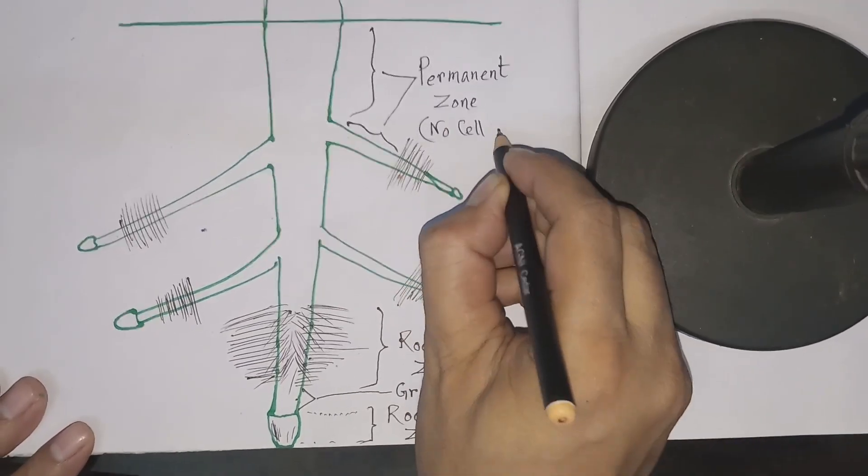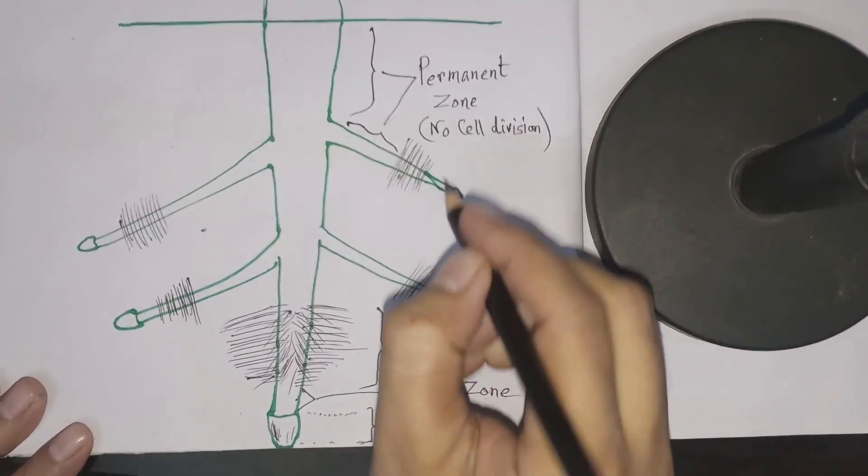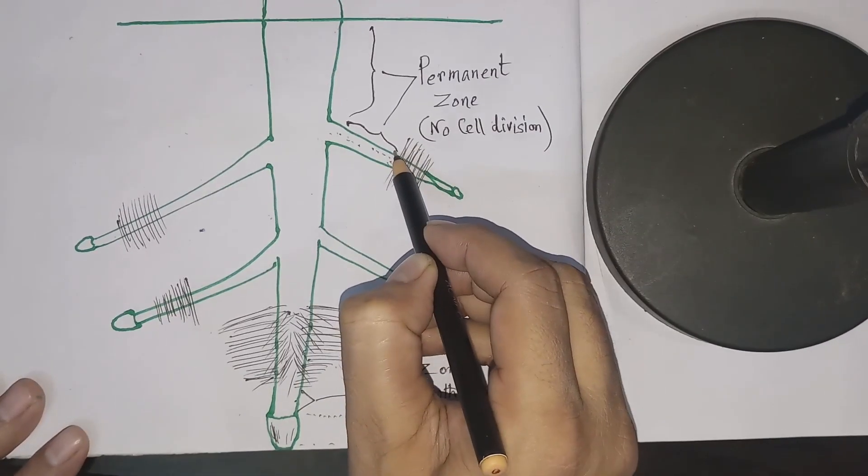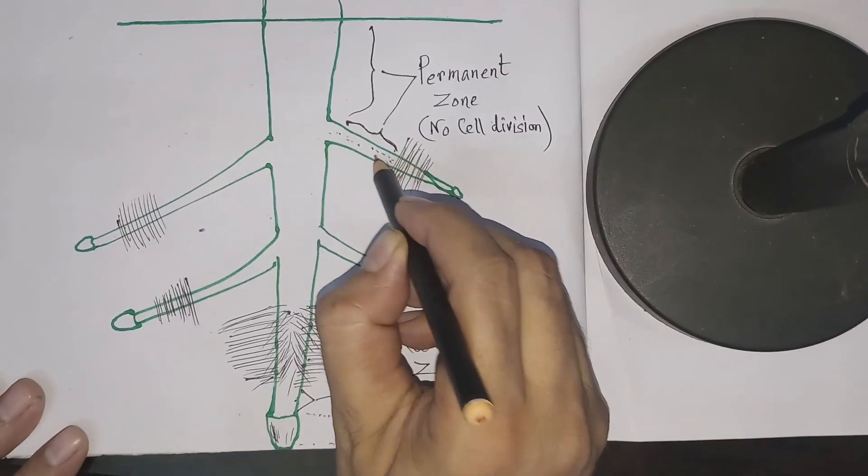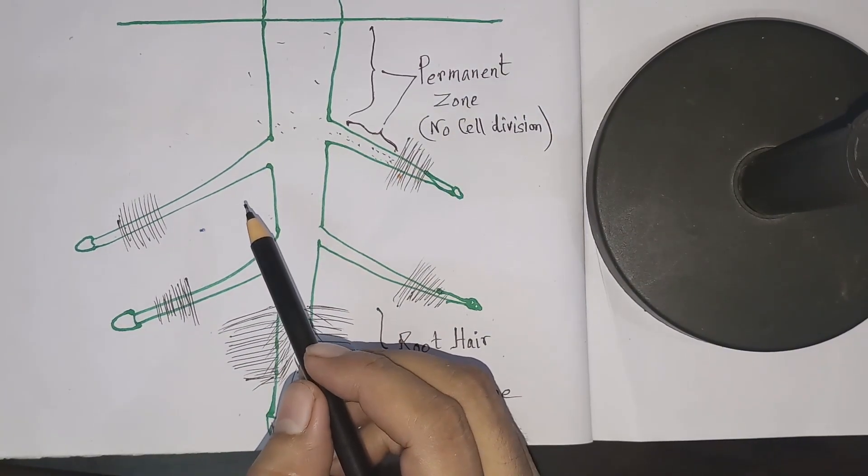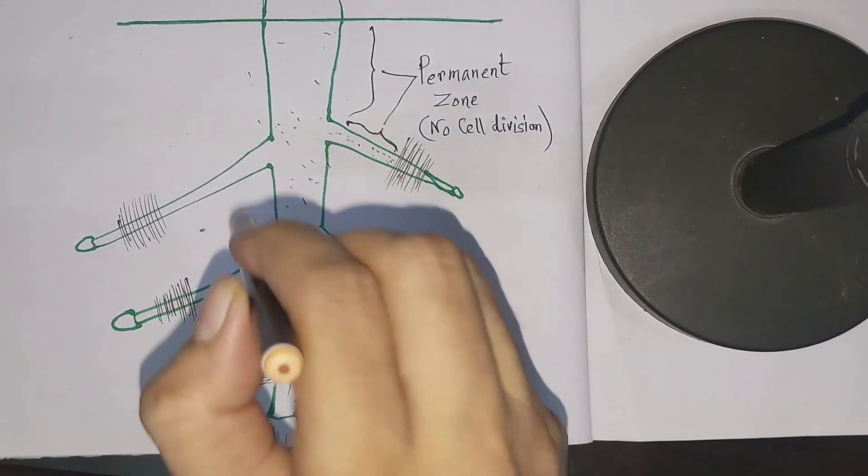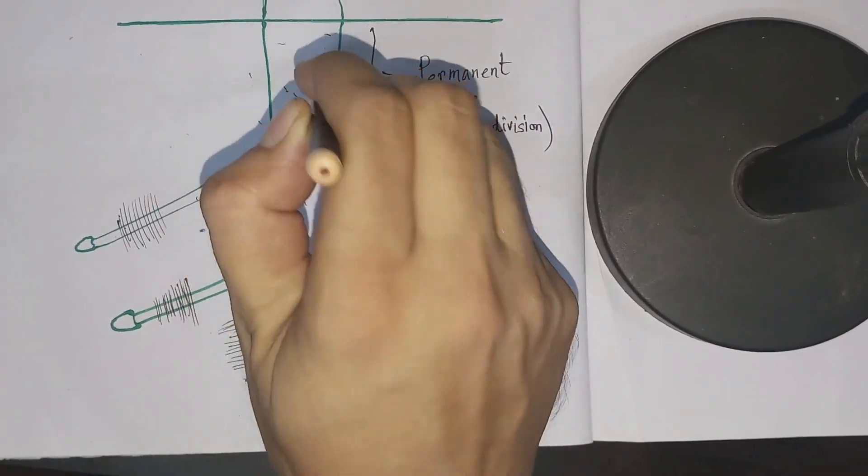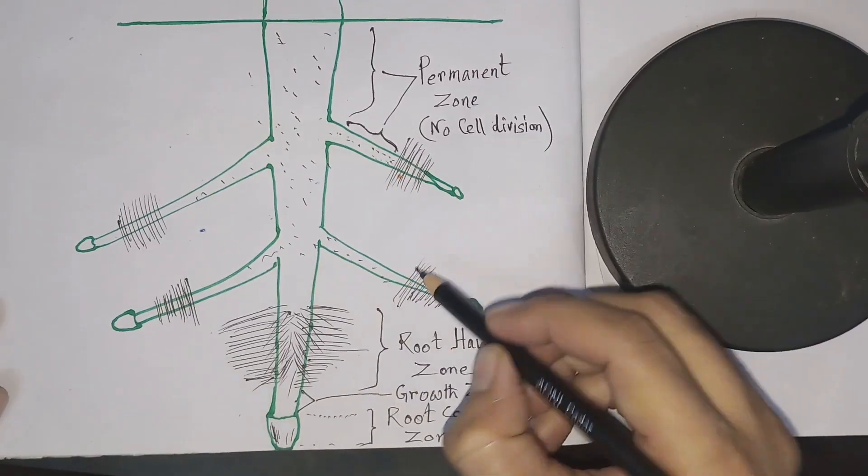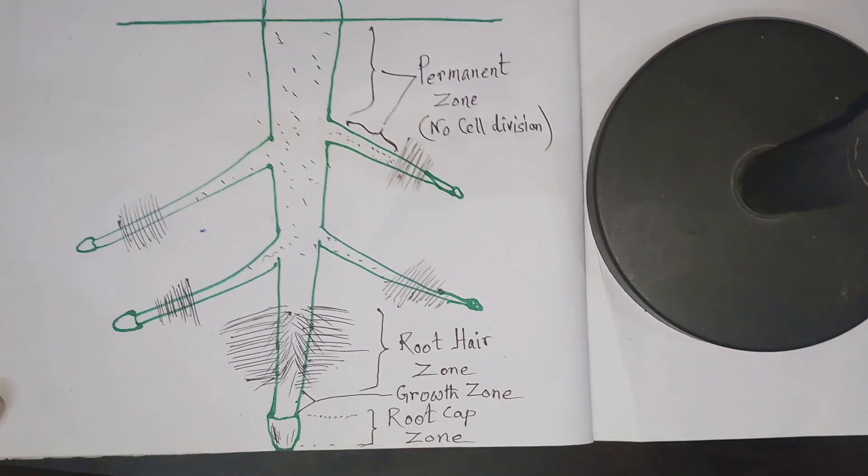So the zones are permanent zone above the root hair zone, the root cap zone. Let us mark the permanent zones and remember all the zones that were previously growth zone will convert into the permanent zone after some time, and the growth zone continues. Now take a screenshot of this picture and practice drawing.